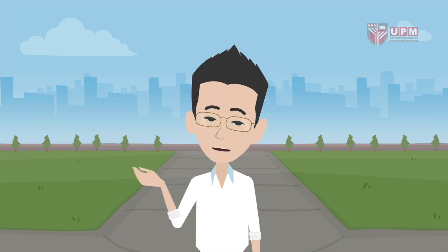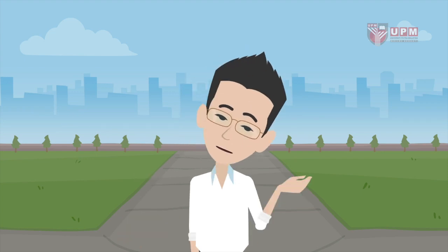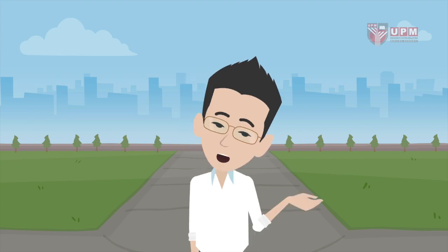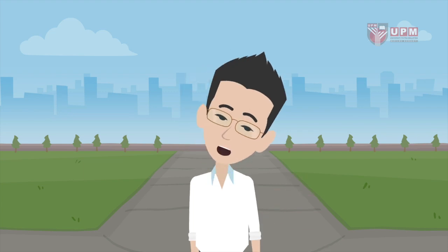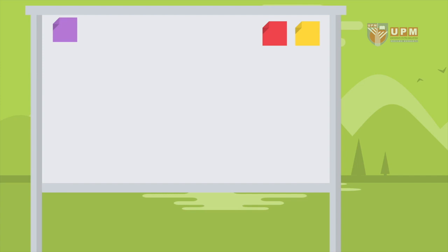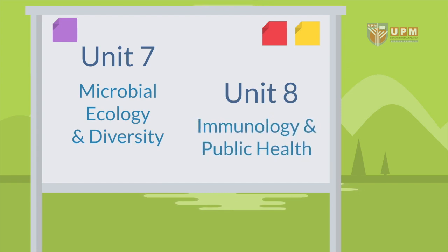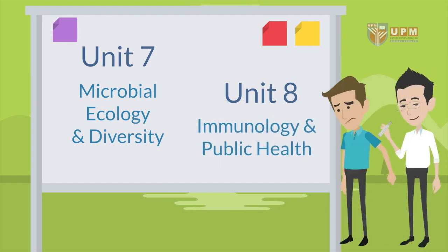For units seven and eight, you will step back out of the microscopic world and try to learn things from a larger scale. In unit seven, Dr. Isma will help you learn microbial ecology and diversity, and in unit eight I will wrap up with basic lessons on immunology and public health.